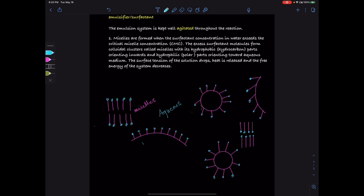These are the monomer droplets. The monomer droplets also orient themselves such that their polar heads are facing toward the aqueous medium and their hydrophobic portions are away from the aqueous medium.